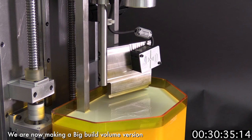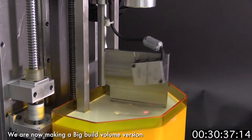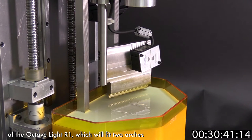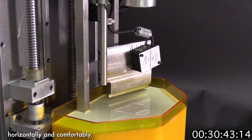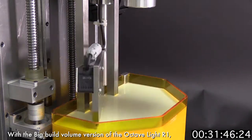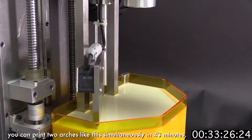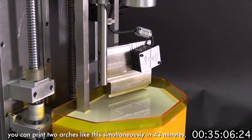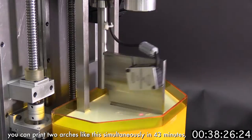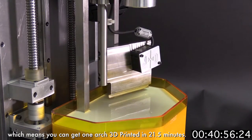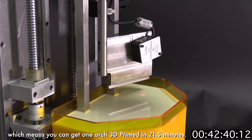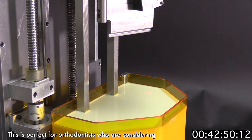We are now making a big build volume version of the Octav Light R1, which will fit two arches horizontally and comfortably. With the big build volume version, you can print two arches like this simultaneously in 43 minutes, which means you can get one arch 3D printed in 21.5 minutes.